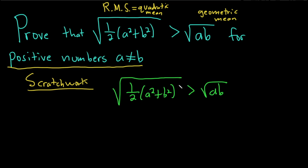So we're trying to show this is true. So if we square both sides, we would get this, 1 half A squared plus B squared, and that's greater than AB.